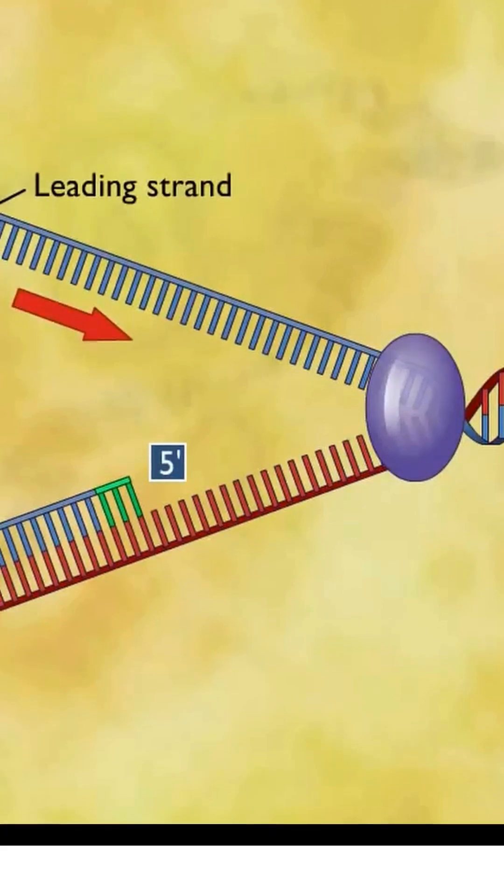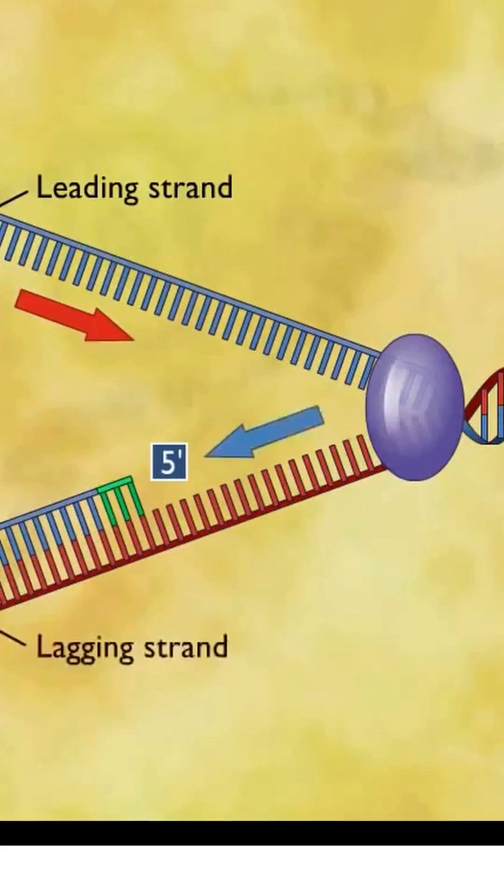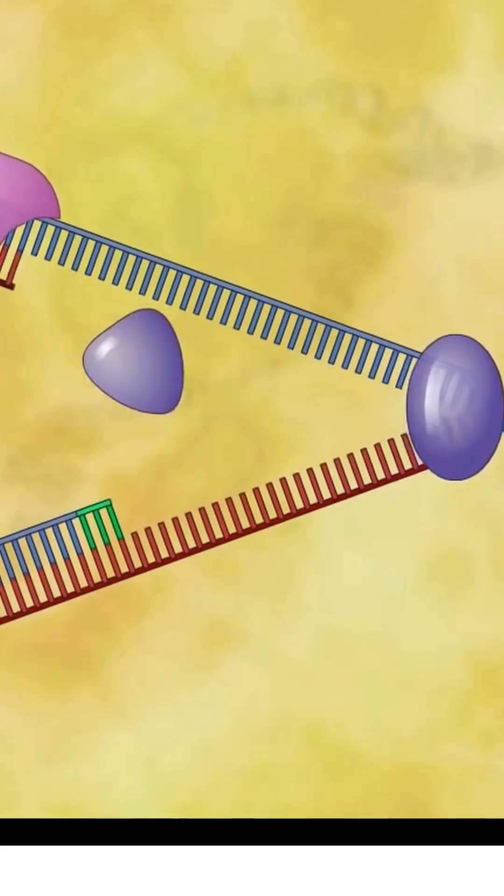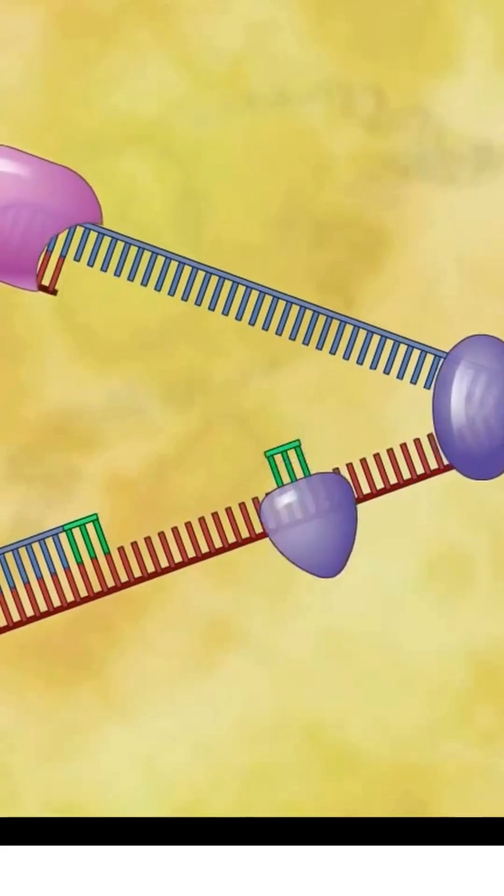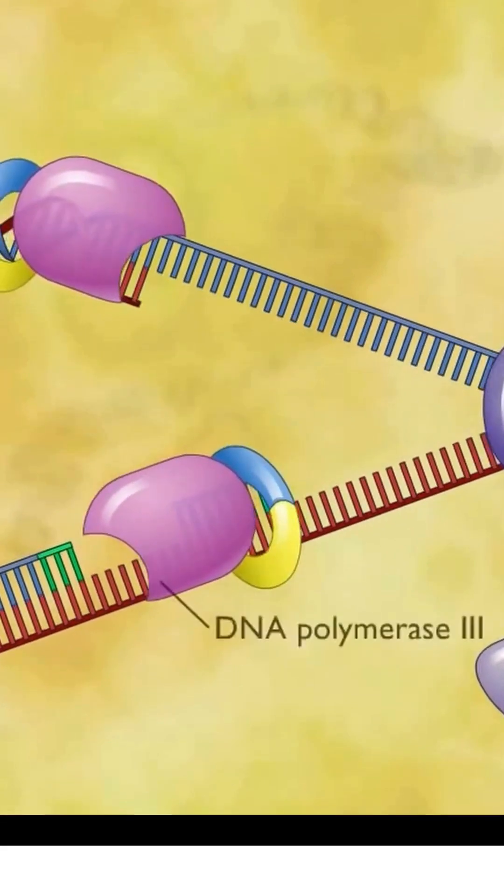In contrast, the lagging strand, which elongates away from the replication fork, is synthesized discontinuously as a series of short segments called Okazaki fragments. When the DNA polymerase 3 reaches the RNA primer on the lagging strand,